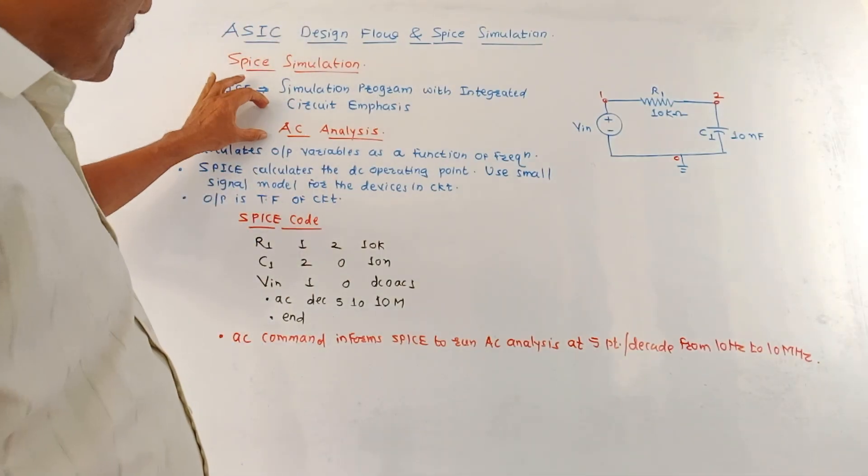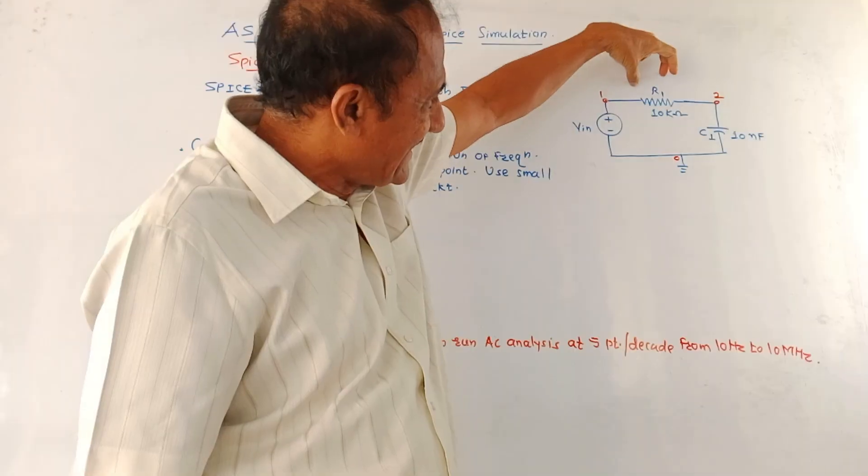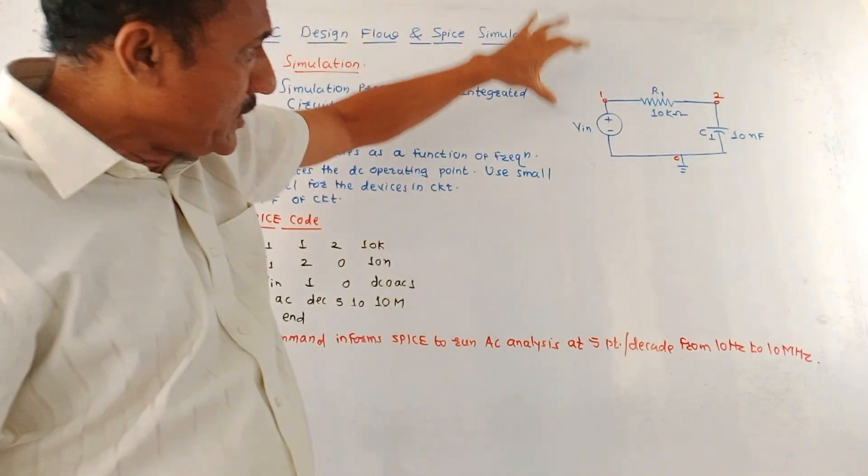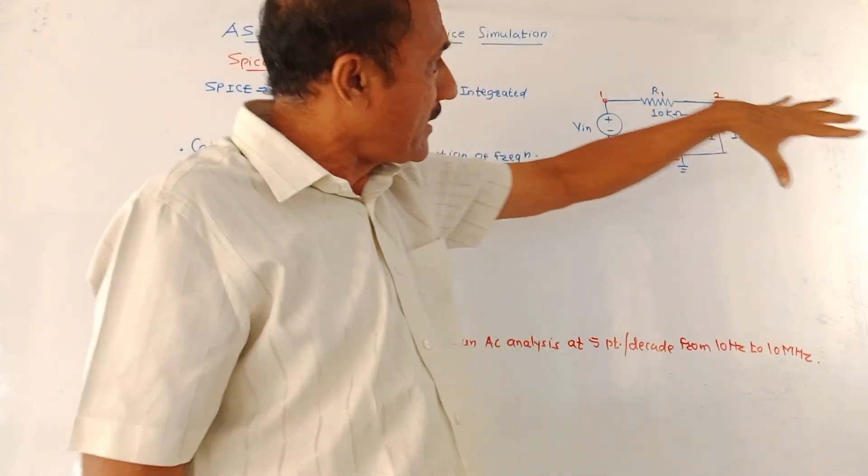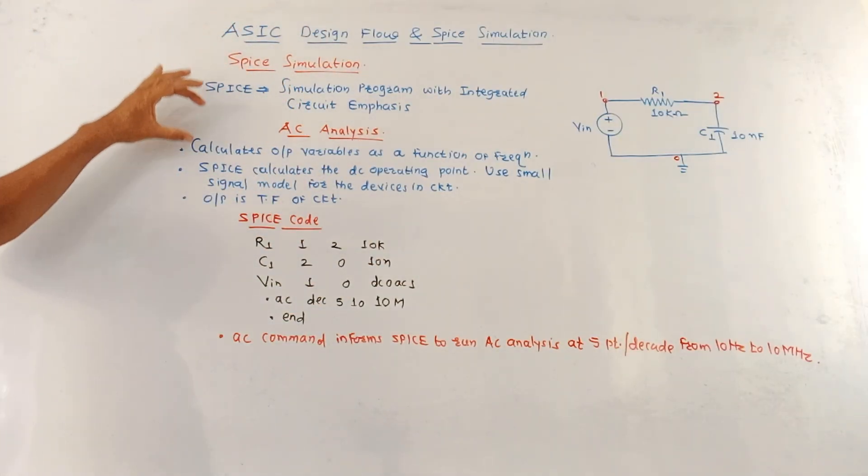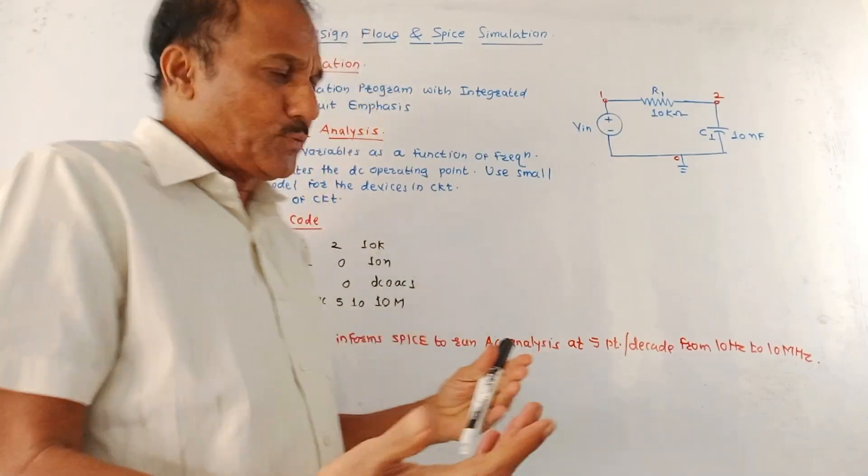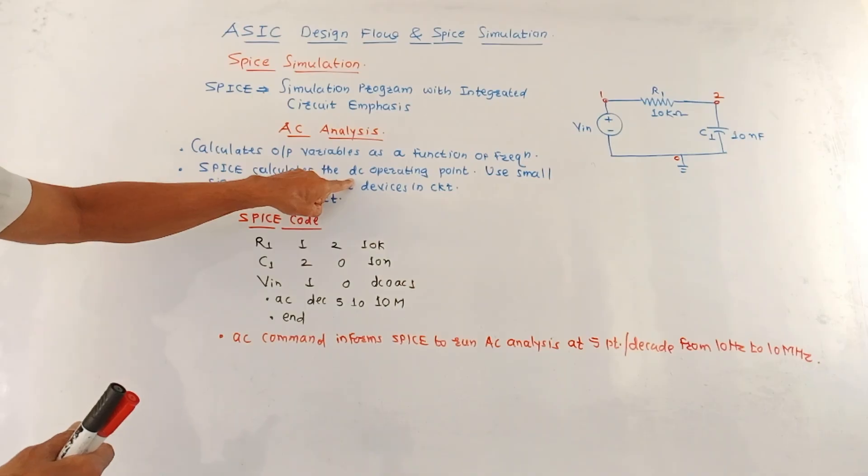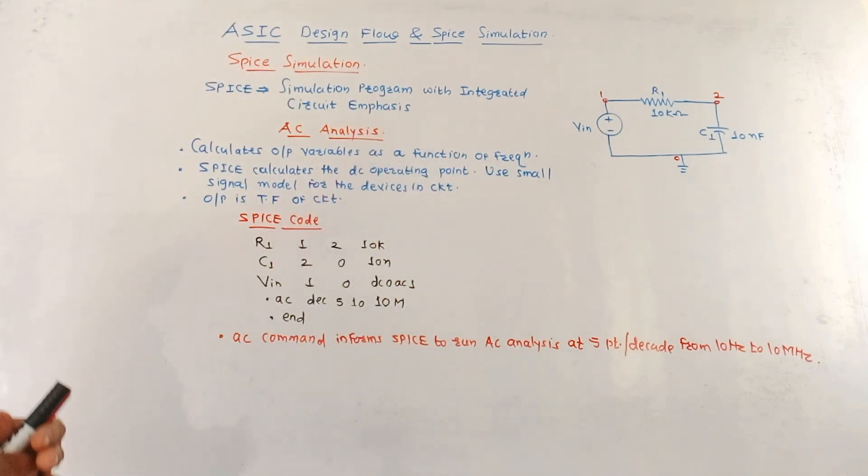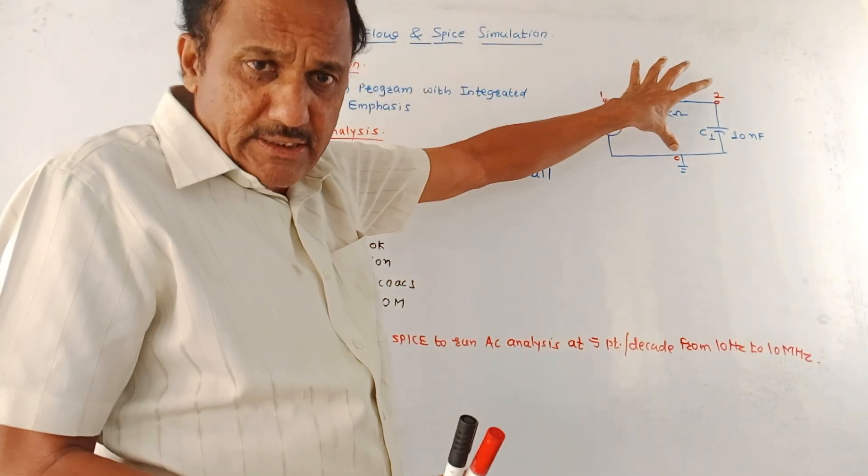Now let us discuss SPICE simulation for AC circuit analysis. As an example, we will consider a simple AC circuit which is consisting of RC, that is a resistor R1 of value 10 kOhm and capacitance C1 of value 10 nF. This is simple RC circuit which is driven by the input voltage VIN. Now different points, different nodes are marked in the circuit. This is 1, 2. This terminal is grounded, which is marked as 0. This AC circuit analysis calculates the output variables as a function of frequency. This analysis can be used to plot the magnitude and phase response. Now the SPICE calculates the DC operating point of the circuit and use small signal model for the devices available in the circuit. In such analysis, the output is usually a transfer function Tf of the RC circuit. As an example, we are considering this simple RC circuit.